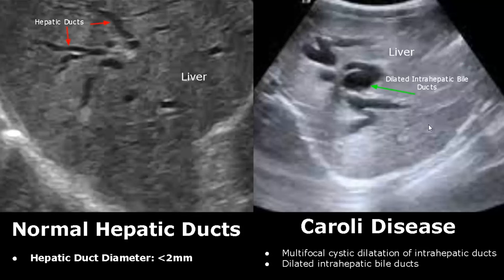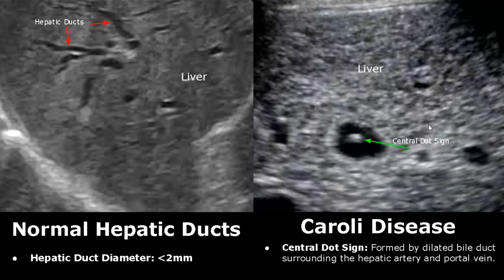The central dot sign is formed by a dilated bile duct surrounding the hepatic artery and portal vein. This dot is formed inside the bile duct by either the hepatic artery or portal vein.